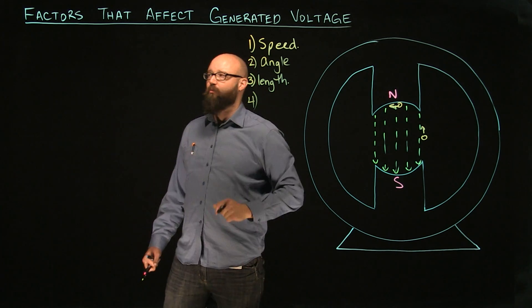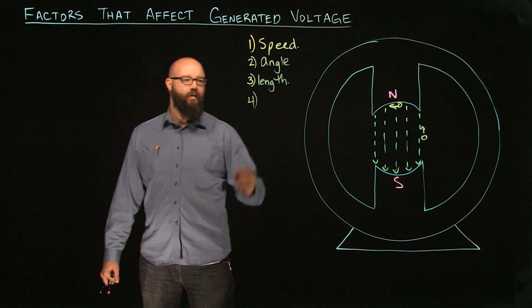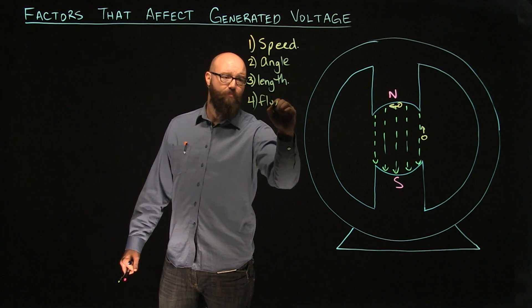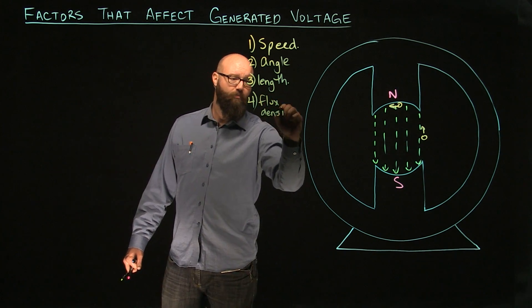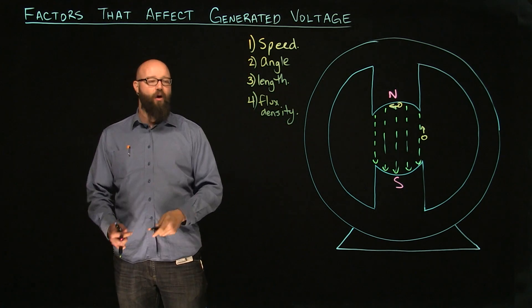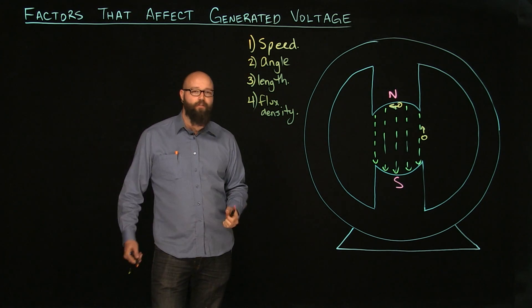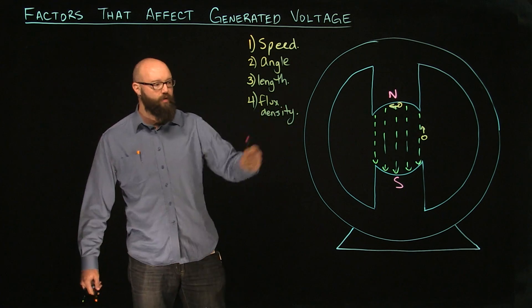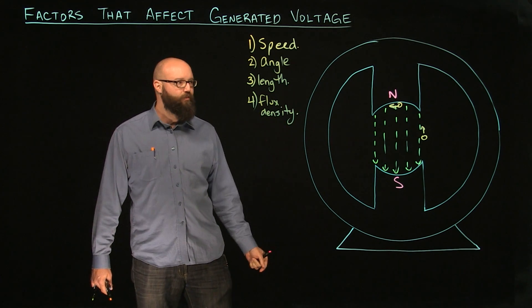Number four, the last one we're going to talk about is the flux density. So flux density. Now, as I said, this right now is not a very good magnetic field. It's not very strong. These poles are not generating a magnetic field that's very strong.